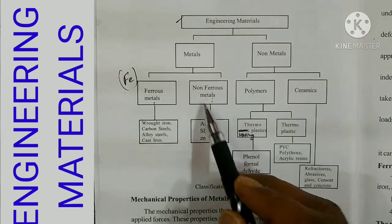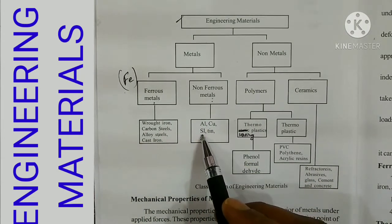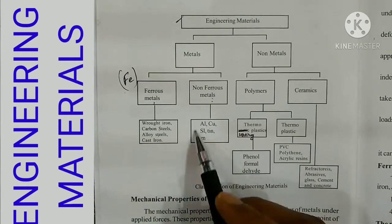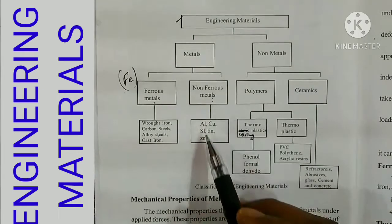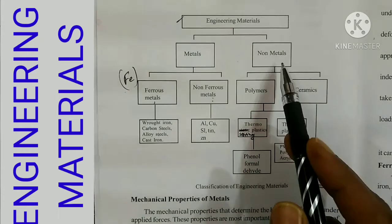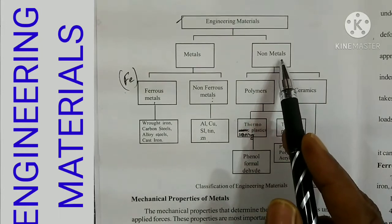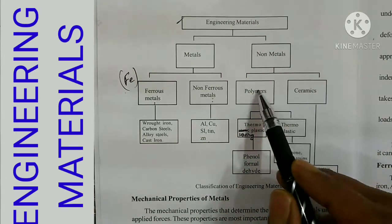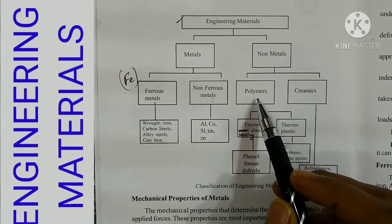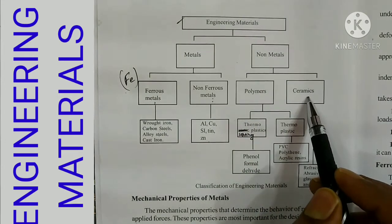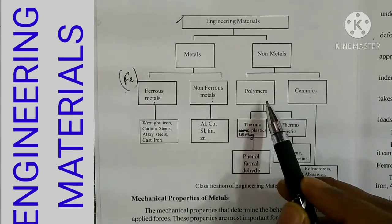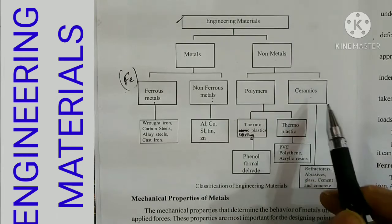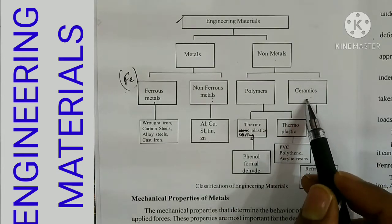Examples of non-ferrous metals are aluminium, copper, silicon, tin, and zinc. For non-metals, we have two categories: polymers and ceramics. Polymers are plastic materials, and ceramics include cement and tiles.